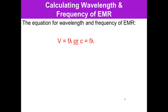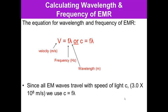The equation for wavelength and frequency of electromagnetic radiation is: V is velocity, measured in meters per second. Frequency is in hertz. Wavelength is in meters. Since all electromagnetic waves travel at the speed of light, multiplying frequency times wavelength must equal 3 times 10 to the eighth meters per second. And again, that is found on page three of your data book.